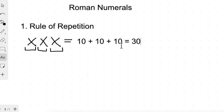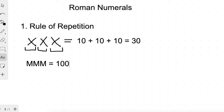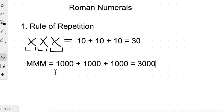For example, we can take M, M, M. When we write M three times, its value is added. One M is 1,000, another M is another 1,000, and another M is another 1,000. So three M's gives us 3,000. This is the first rule of repetition: when we repeat a symbol, its value is added.